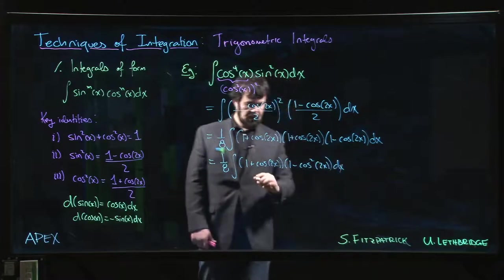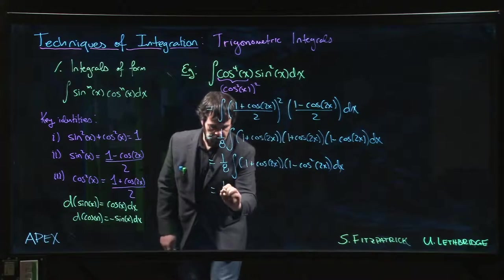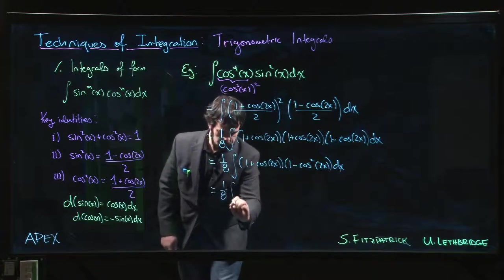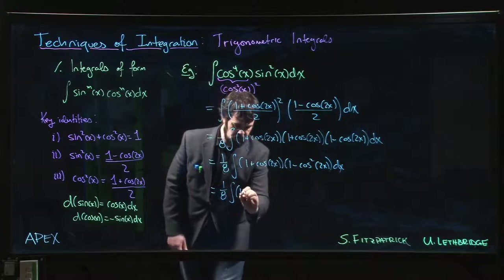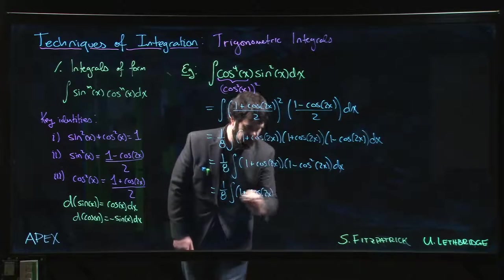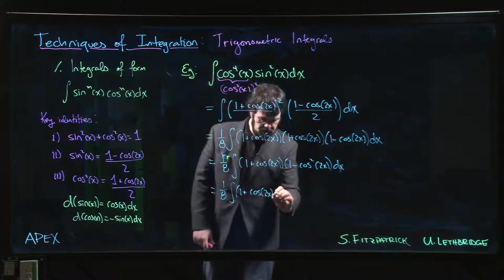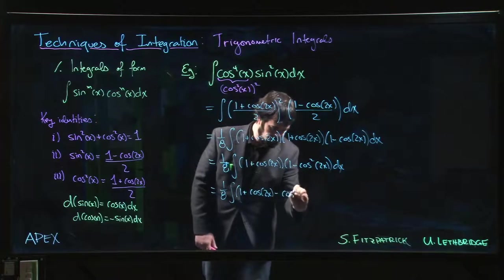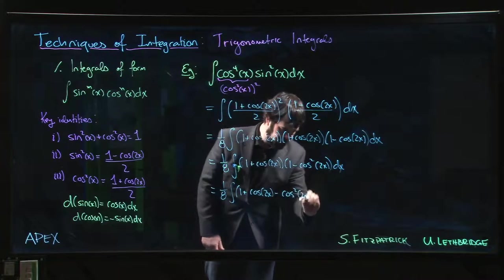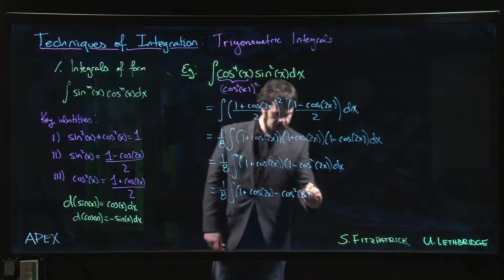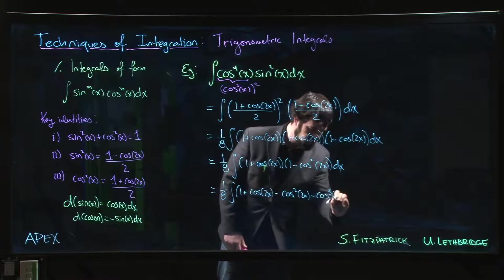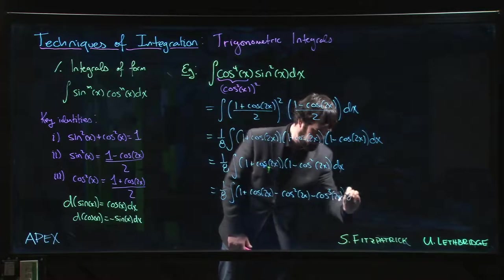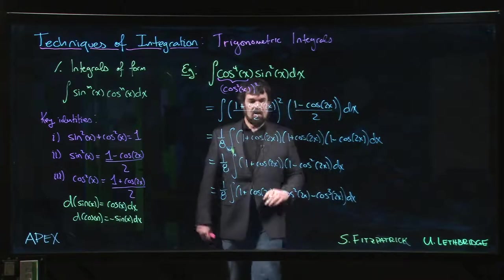Let's keep going, multiply it once more. So we get 1, and then there's a cos 2x, and then there's a cos squared 2x, and then finally minus cos cubed 2x.